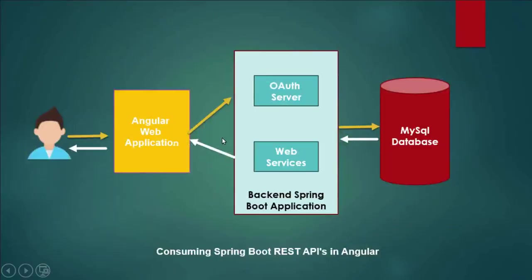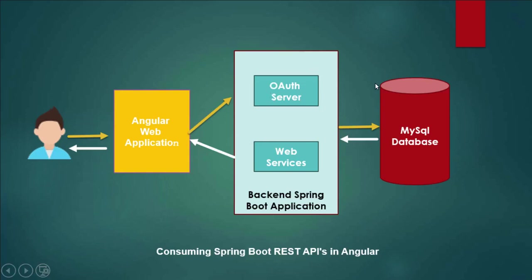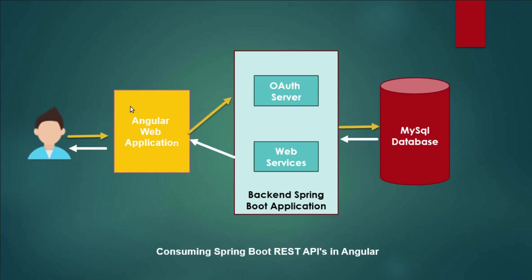Hello guys, welcome to Cap T Tutorials. Today I am going to cover how Angular applications and Spring Boot applications can talk to each other over HTTP protocol. I have one separate Angular application and one Spring Boot application. The Spring Boot app has an authorization server and REST endpoints to fetch, save, delete, and update employees from the database, and I am displaying all that data in the Angular web application.